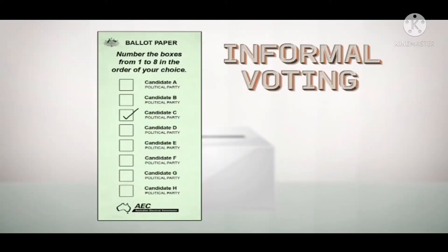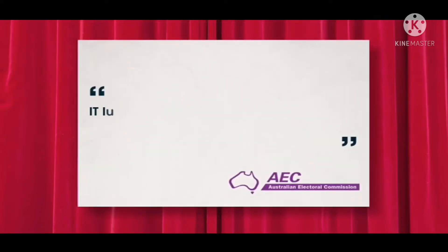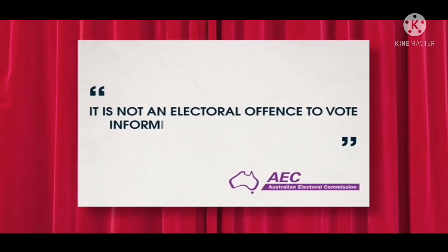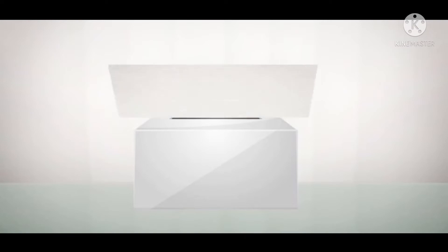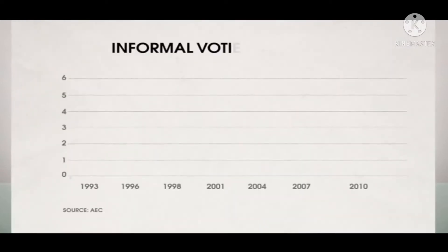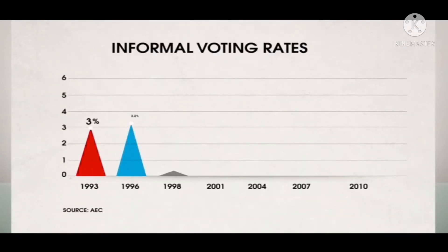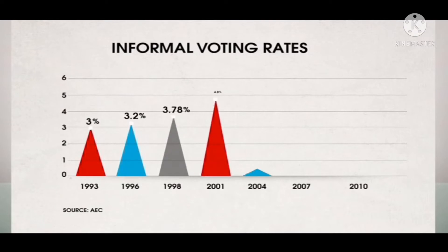Voting informal is actually a horrible word for describing that you may wish to vote on the issues yourself and that you don't want someone else to represent you. Voting informal means that you haven't voted according to the rules for voting as directed by the parliament,